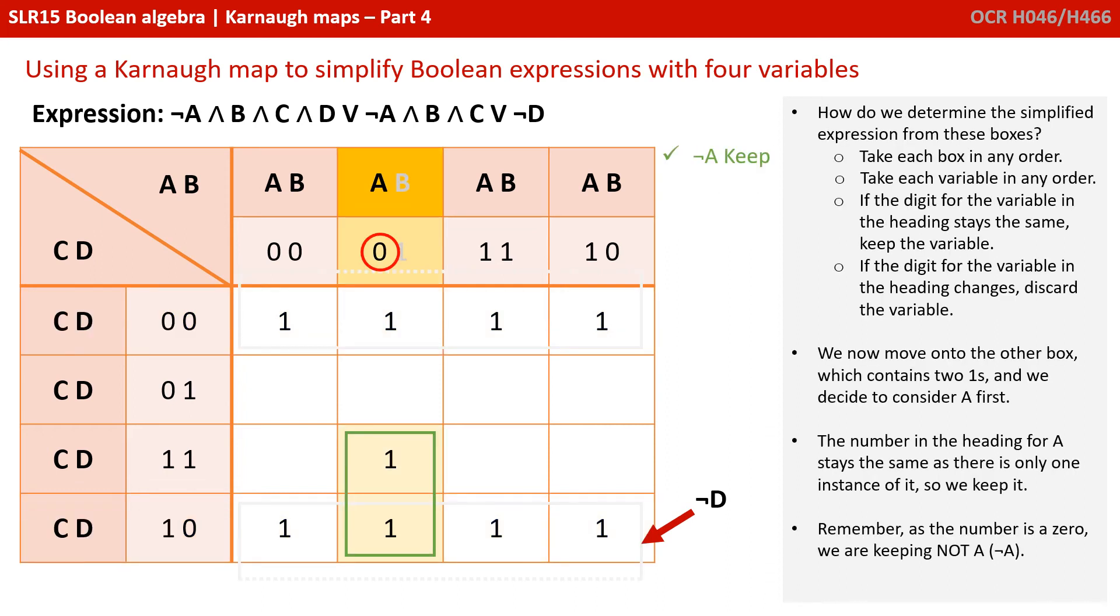We now move on to the other box, which contains 2 ones, and we consider A first. The number in the heading for A is staying the same, as there's only one value in the heading, so we keep it. Remember, as the numbers are 0, we're keeping NOT A.